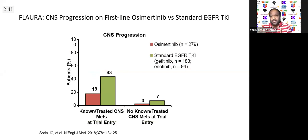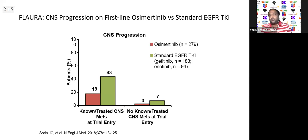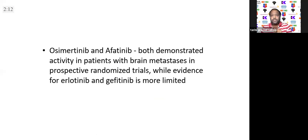Looking at FLORA data more closely: the green line represents standard EGFR TKI and the brown line osimertinib, in patients with known CNS at trial entry. For CNS progression, osimertinib did much better. In other subgroups — three new CNS lesions with osimertinib baseline versus seven with the standard TKI — osimertinib did a very good job because of its well-established CNS penetration.